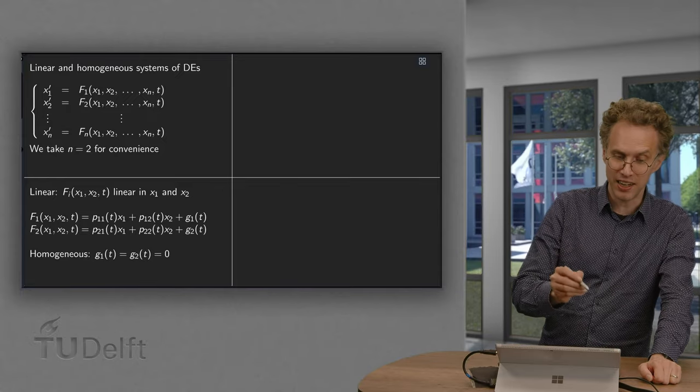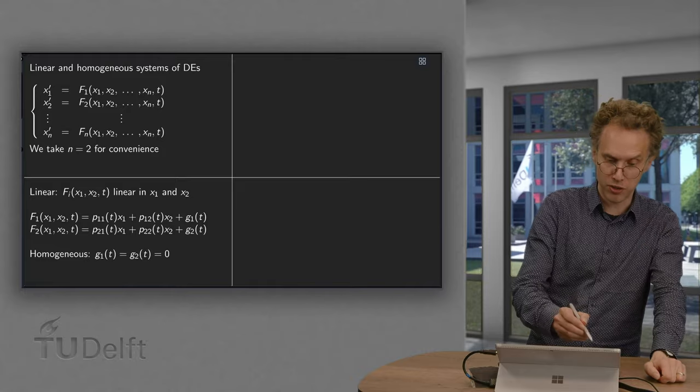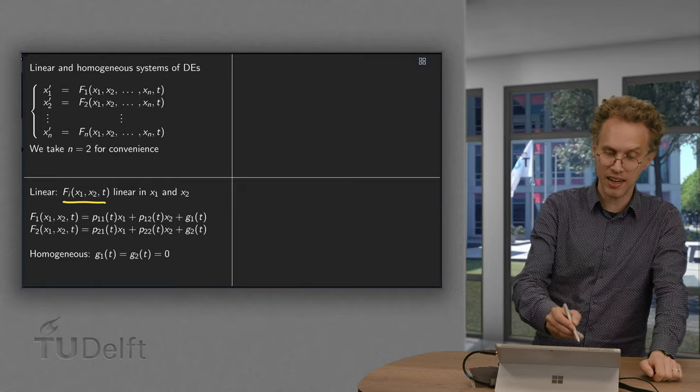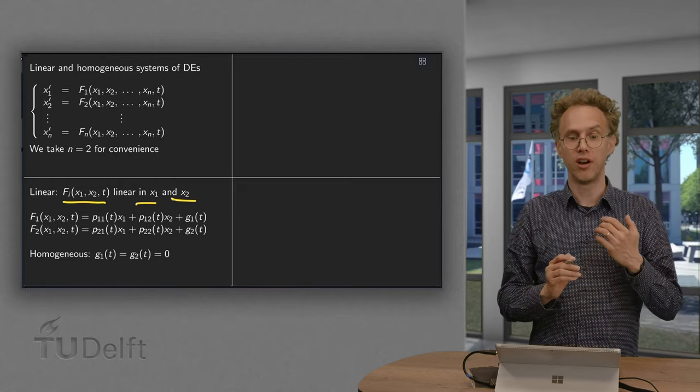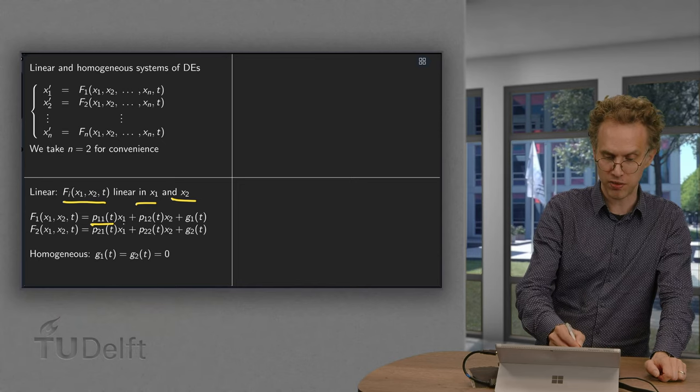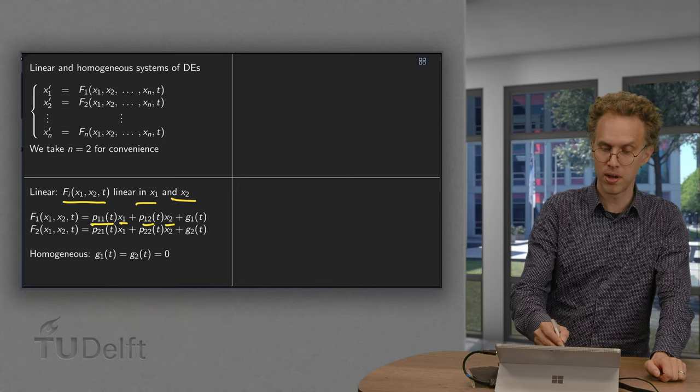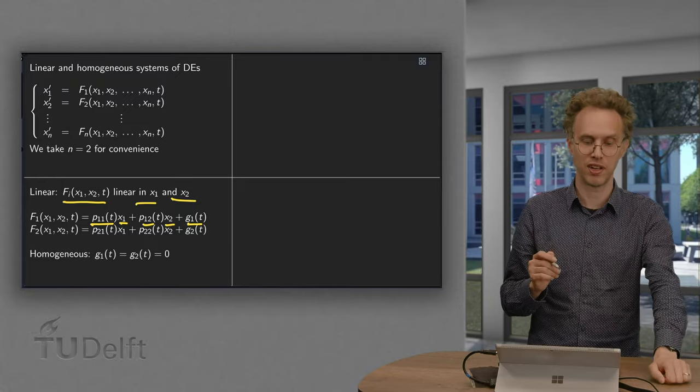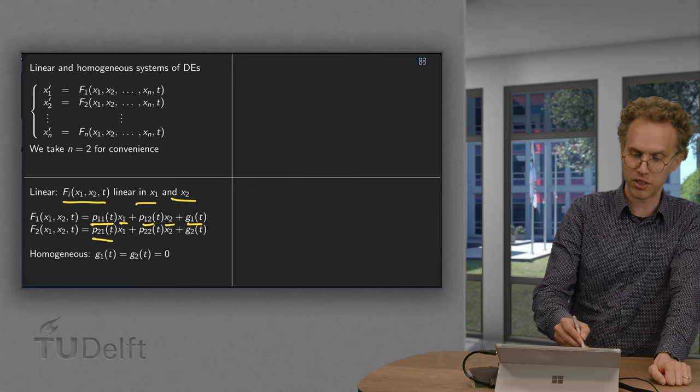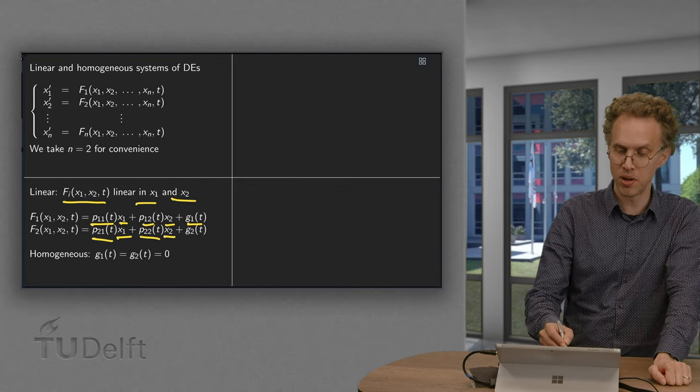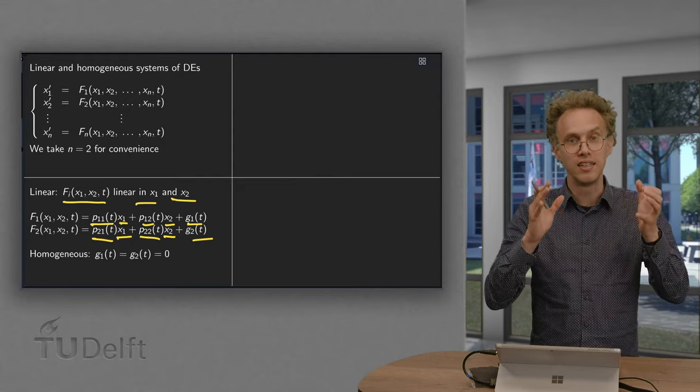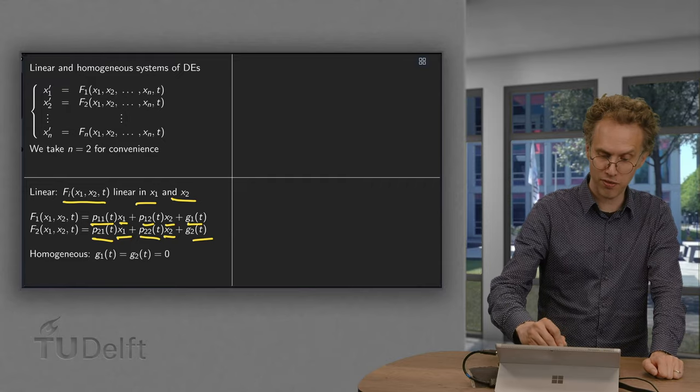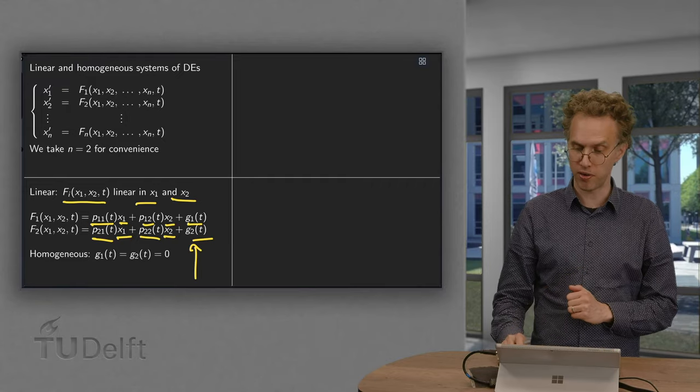Then we require for linearity that the right hand sides, f1 and f2, can in general be general functions of x1, x2 and t, but now we impose that they are linear in x1 and in x2. So f1 is rubbish of t times x1 plus other rubbish of t times x2 plus more rubbish of t. So you may have rubbish of t, but you are linear in x1 and x2. Same for f2. You have rubbish of t times x1 plus some rubbish of t times x2 plus some other rubbish of t. Then, in that case, you have a linear system of differential equations. You are homogeneous if furthermore g1 and g2 are both equal to 0.